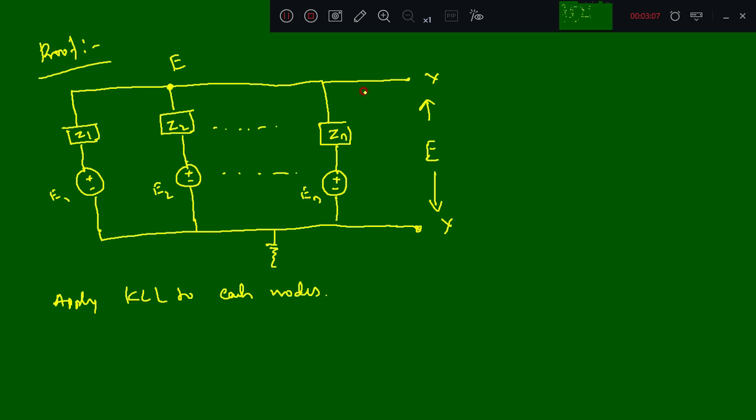It goes on till E minus En divided by Zn. That equation I am going to write here as E minus E1 divided by Z1 plus E minus E2 divided by Z2.